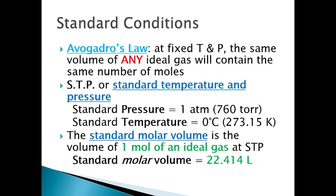STP stands for Standard Temperature and Pressure. The standard pressure is always one atmosphere. The standard temperature is always zero degrees Celsius. However, you cannot use Celsius in these chemical equations because you can end up with a negative Celsius value, which violates laws of science. So you need to convert that into Kelvin before plugging any values into your equations. Standard temperature is zero degrees Celsius; standard pressure is one atmosphere.